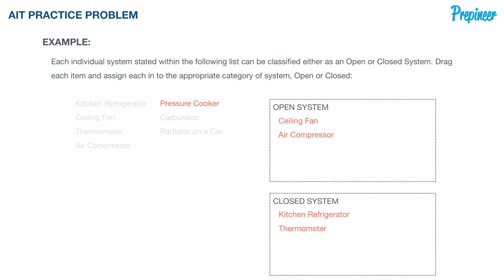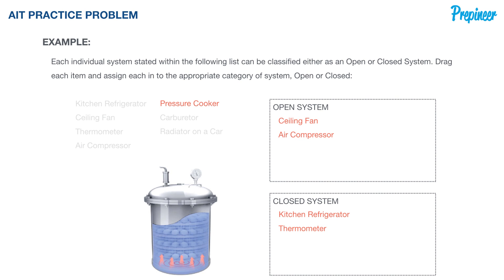What about a pressure cooker? Here's the pressure cooker with our system boundaries. Neglecting any nominal amount of steam leakage, a pressure cooker is a closed system — it supplies heat but does not exchange any mass with the environment outside its system boundaries.